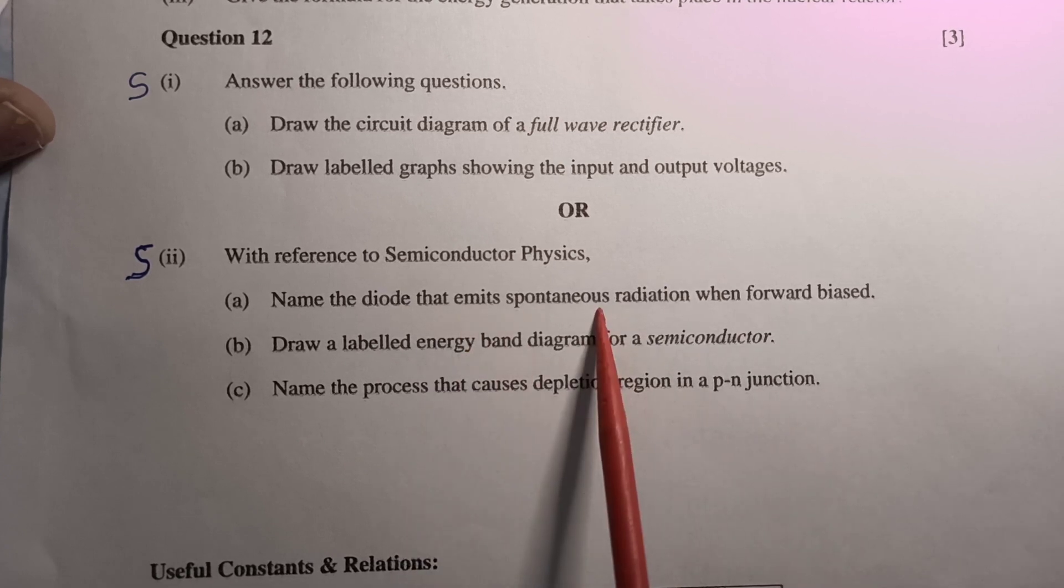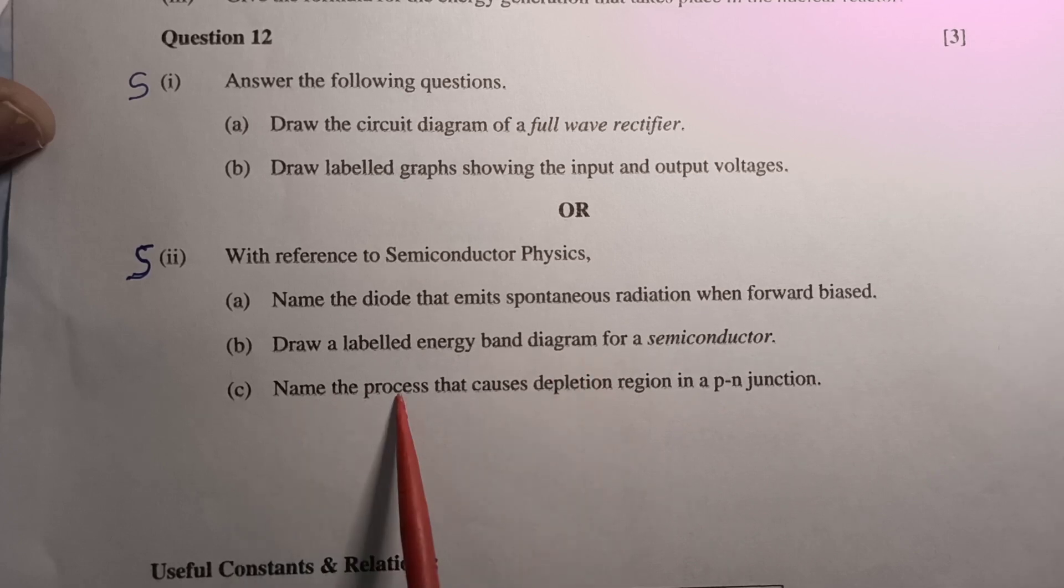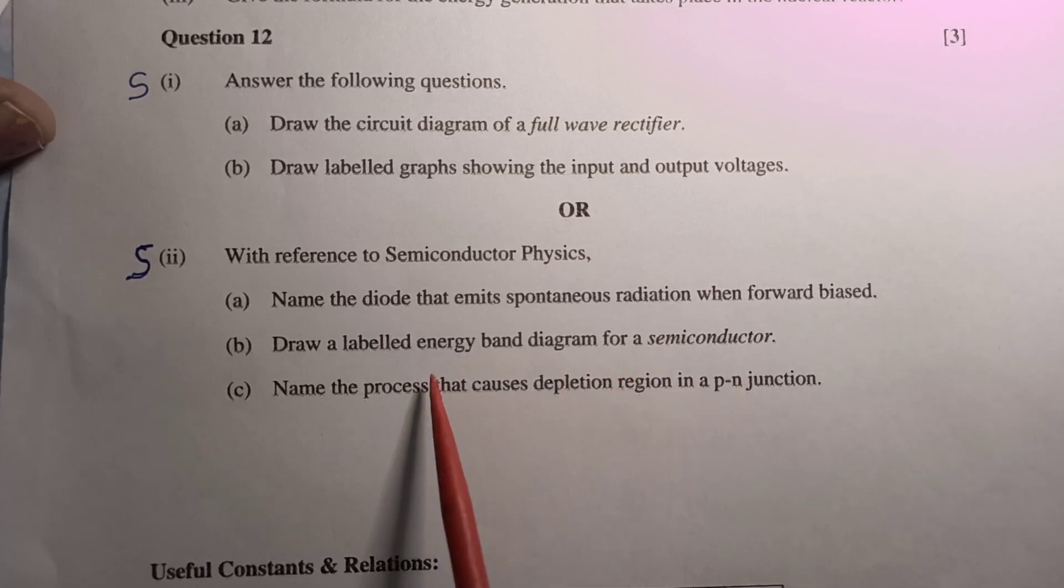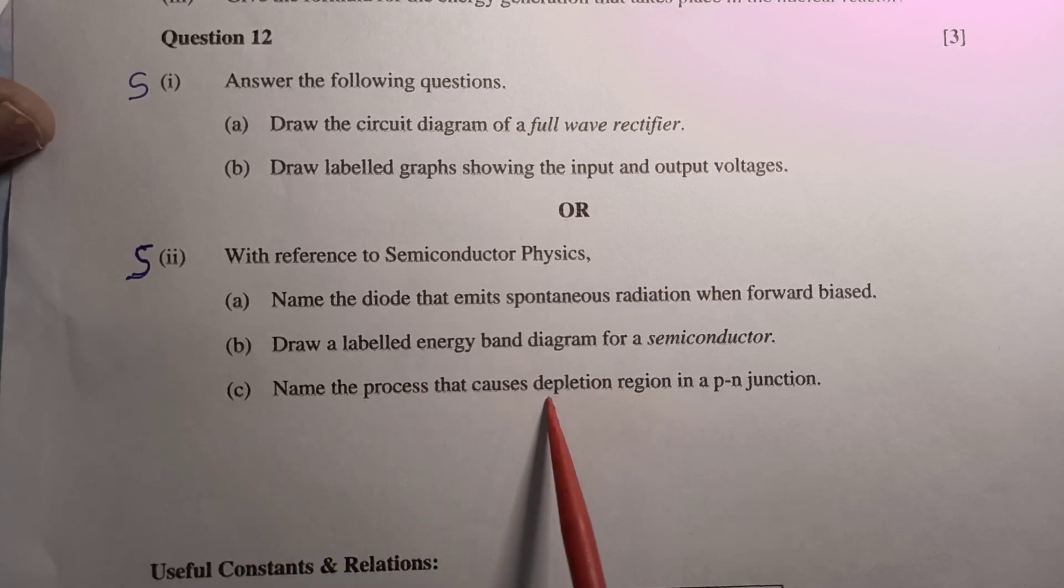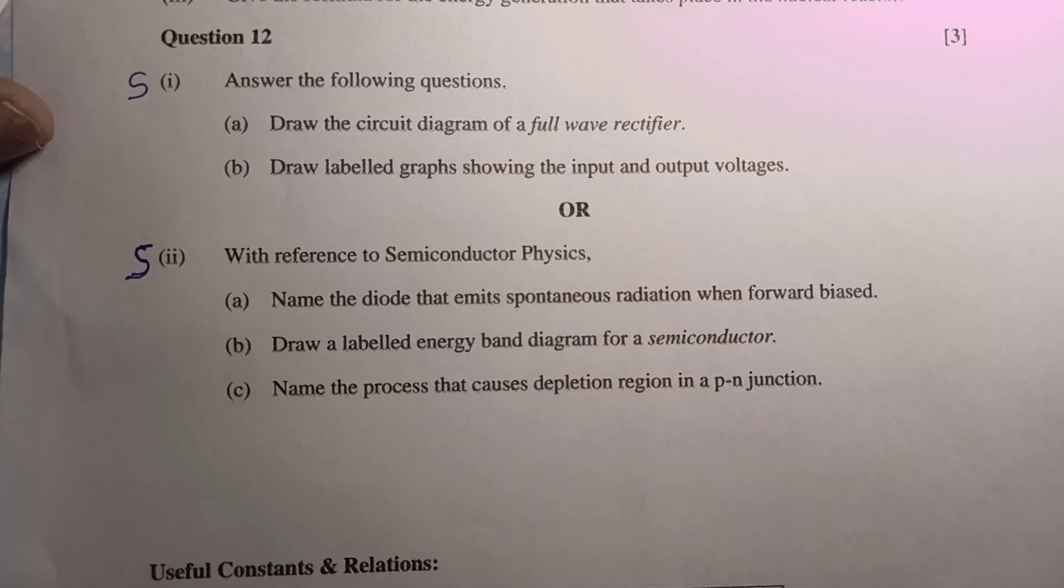That is LED, then semiconductors energy band diagram, and name the process that is diffusion from the high electron concentration region to low electron concentration region. The electrons diffusion and the same for the hole diffusion - this process causes depletion region in p-n junction. So these questions of total six marks are being asked in the sample paper.